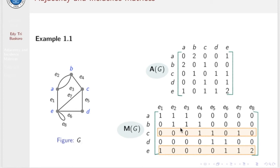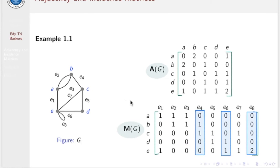Consider vertex E — this vertex is only incident with edges E1, E6, E7, and E8. In the corresponding row, we have 1s except for column E8, where we have 2 because E8 is a loop. Note that in each column, we have exactly two entries of 1s, since each edge is incident to 2 vertices — with loops counted twice.